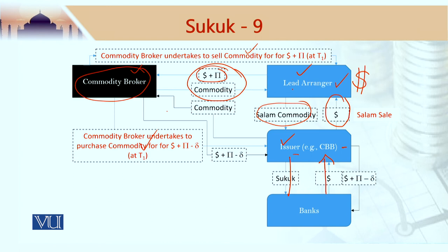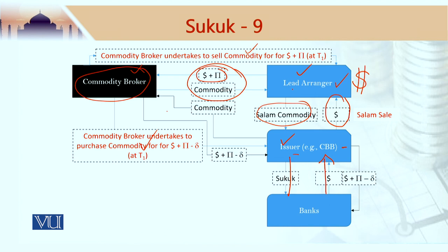To summarize, in the case of a Sukuk Salam, a Salam Sukuk is issued by an issuer like the Central Bank of Bahrain. This issuance is backed by two or three arrangements: one could be a Salam structure used by the lead arranger to provide money to banks in need of cash, and a couple of WAD structures pursuant to which the commodity broker gives the commodity to the lead arranger, and another commodity sale between the issuer and the commodity broker which generates the cash paid back to the investor banks as their initial investment.